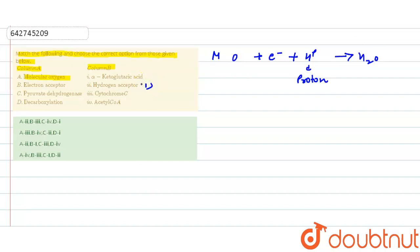Hence molecular oxygen is linked with the hydrogen acceptor. Moving to B, electron acceptor.